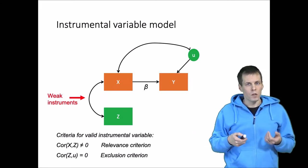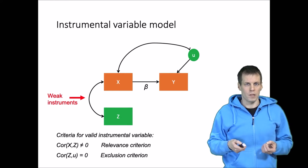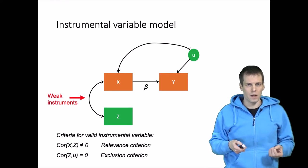If x and z are not strongly correlated, then instrumental variable estimation can be very imprecise and it can be biased.